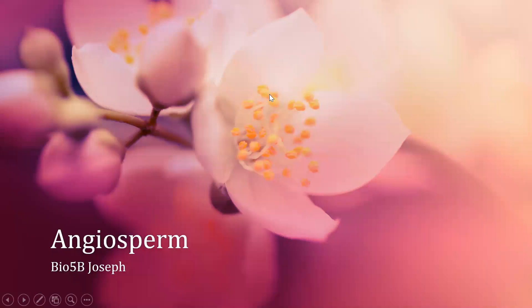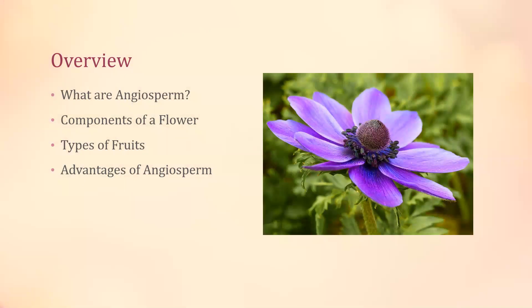Hi guys, this is Caitlin. I am one of your SI leaders for your Bio 5b class with Dr. Joseph. Today we're going to be talking about angiosperms and the different characteristics that an angiosperm has. Here's a quick overview: first we're going to talk about what angiosperms are, the different components of a flower, types of fruit, and advantages that the angiosperm clade has.